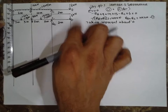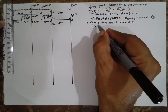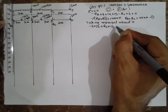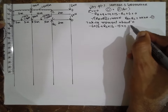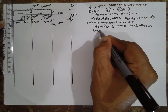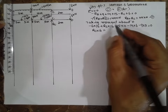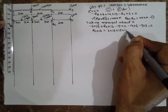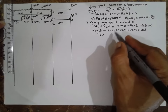Considering the moment equation about A: minus 6 into 18, plus RC into 16, minus 15 into 11, minus 14 into 6, minus 9 into 3, equals 0. Bringing all terms to one side: RC equals (6 into 16 plus 15 into 11 plus 14 into 6 plus 9 into 3) divided by 16. Therefore RC equals 24 kilonewton.